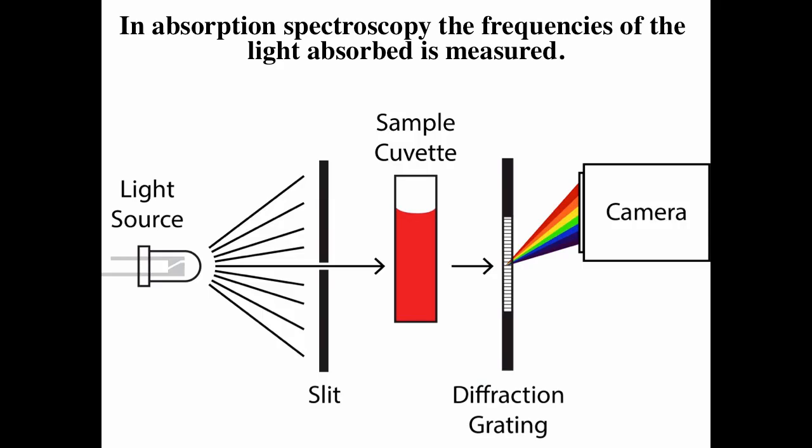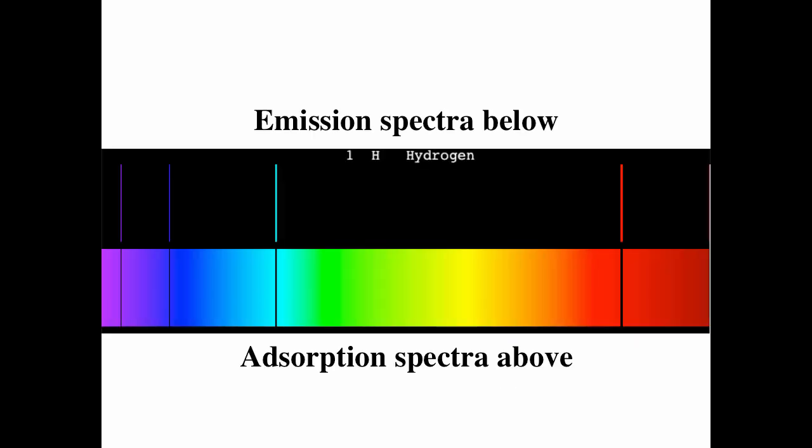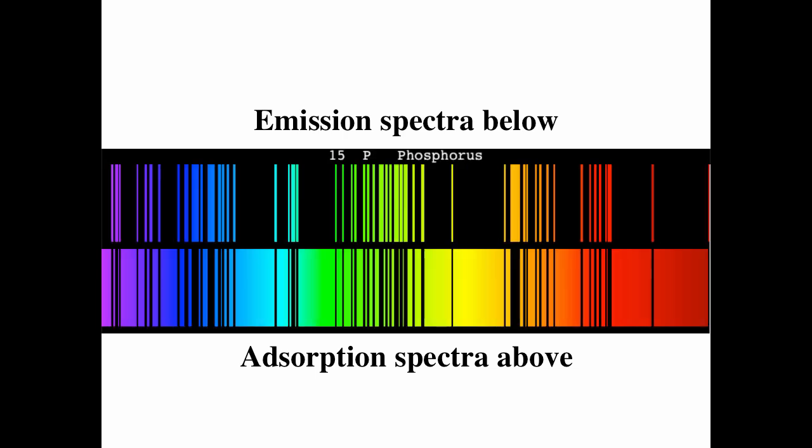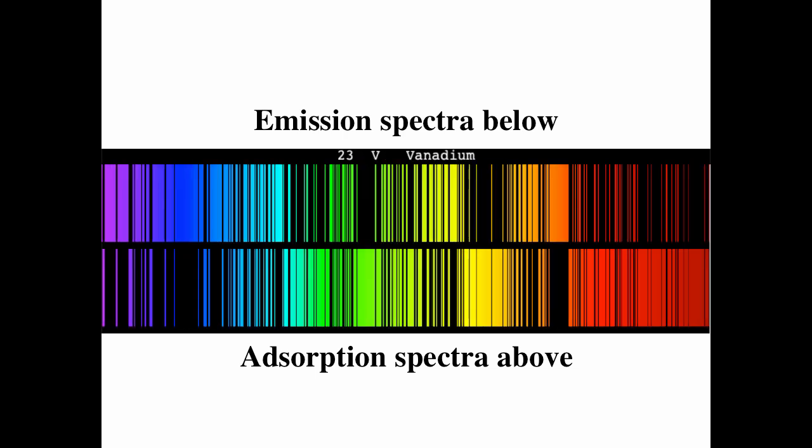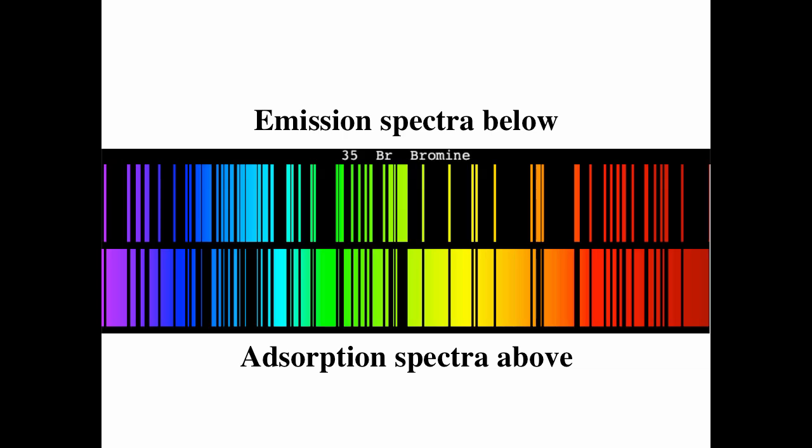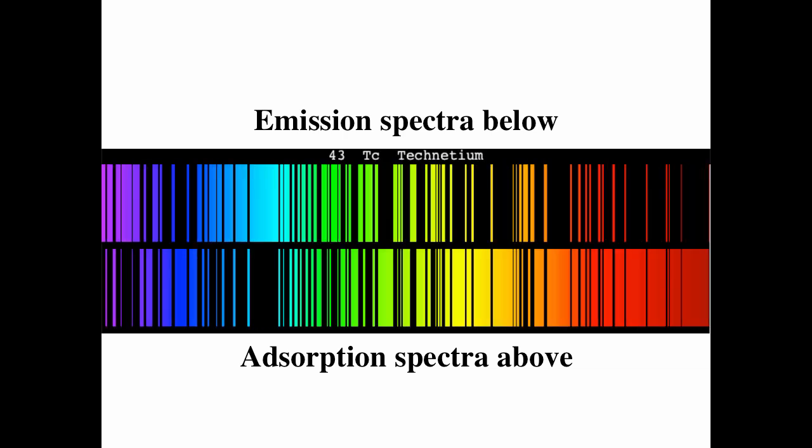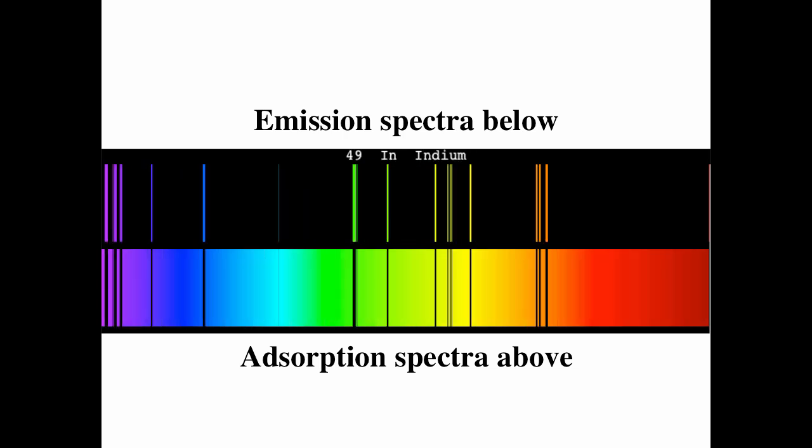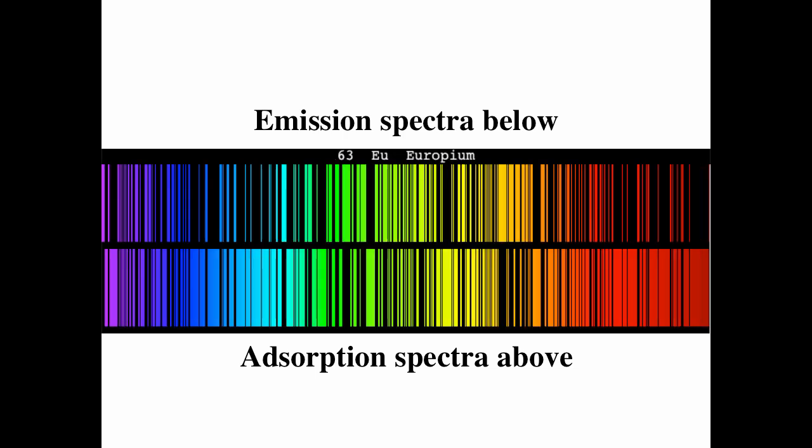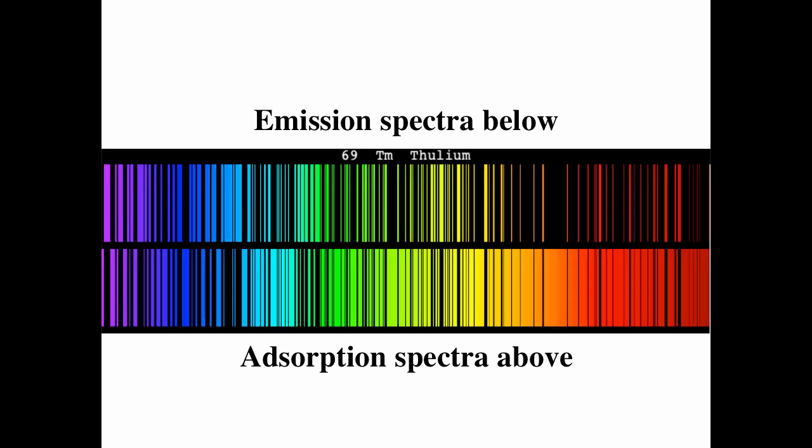In absorption spectroscopy, you have a light source, and you shine it through your sample and see which light is absorbed. The absorption spectra is similar to your emission spectra. On top, we have the emission spectra, and on bottom, we have the absorption spectra. If you notice, the black lines of the absorption spectra are opposite to a color line of the emission spectra. The light that the sample emits when it falls back down has exactly the same energy as the light the sample absorbs in the ground state.